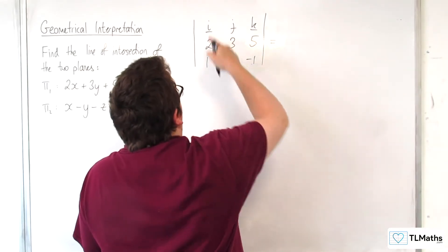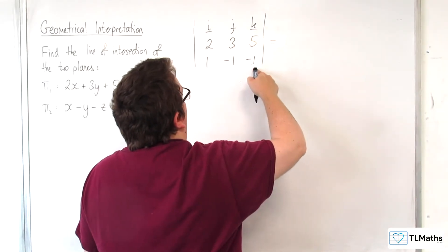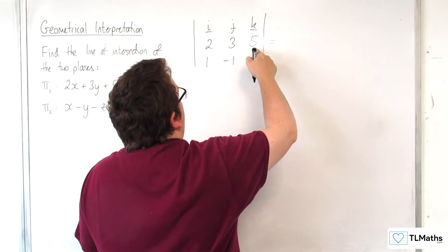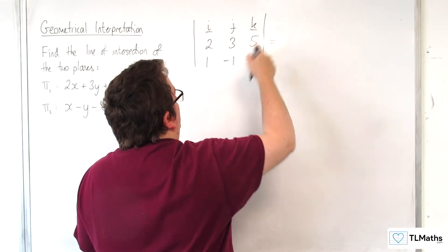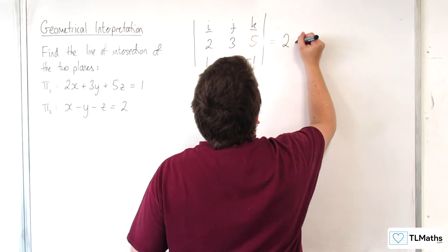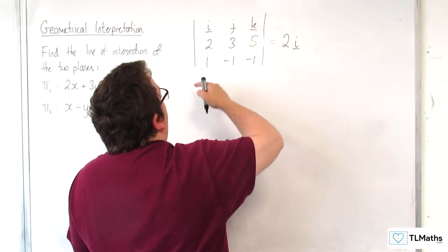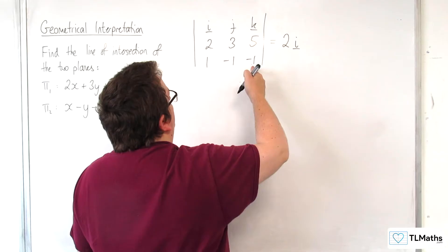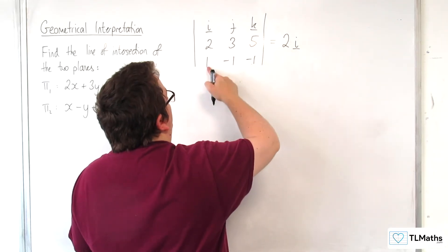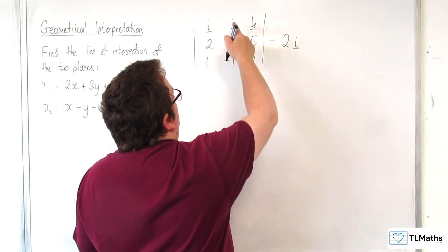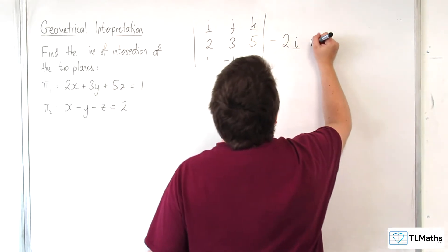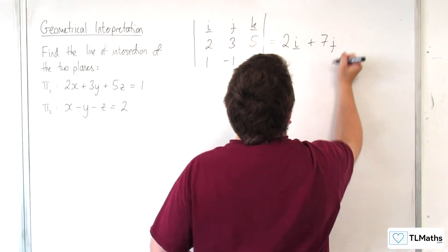So for I, we're going to have 3 times -1, which is -3, take away 5 times -1. So we've got -3 plus 5, so 2 lots of I. Then for J, we're going to have 2 times -1, -2, take away 5, so -7. But because we're working with the middle column here, that's going to be +7J.